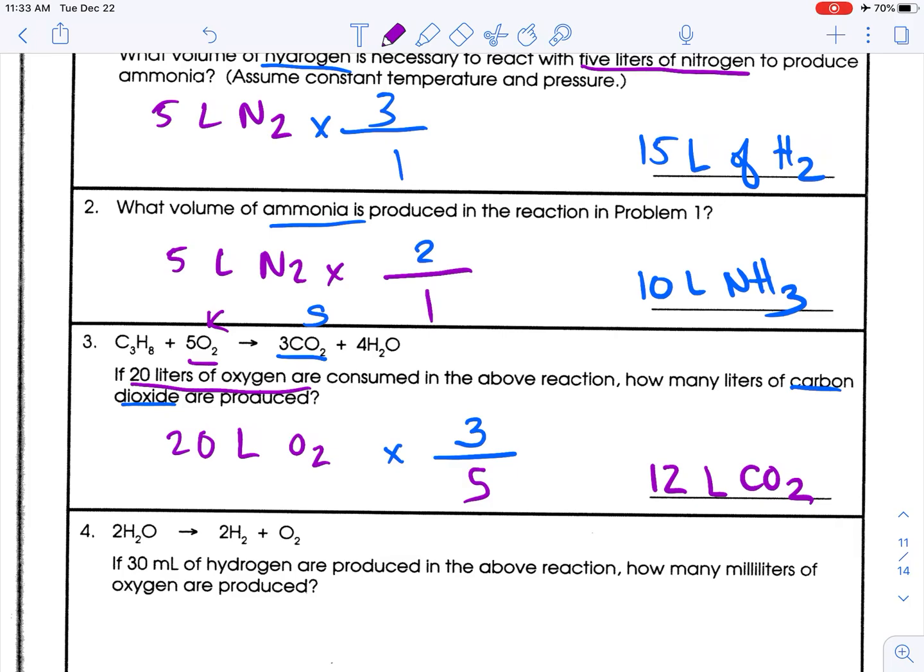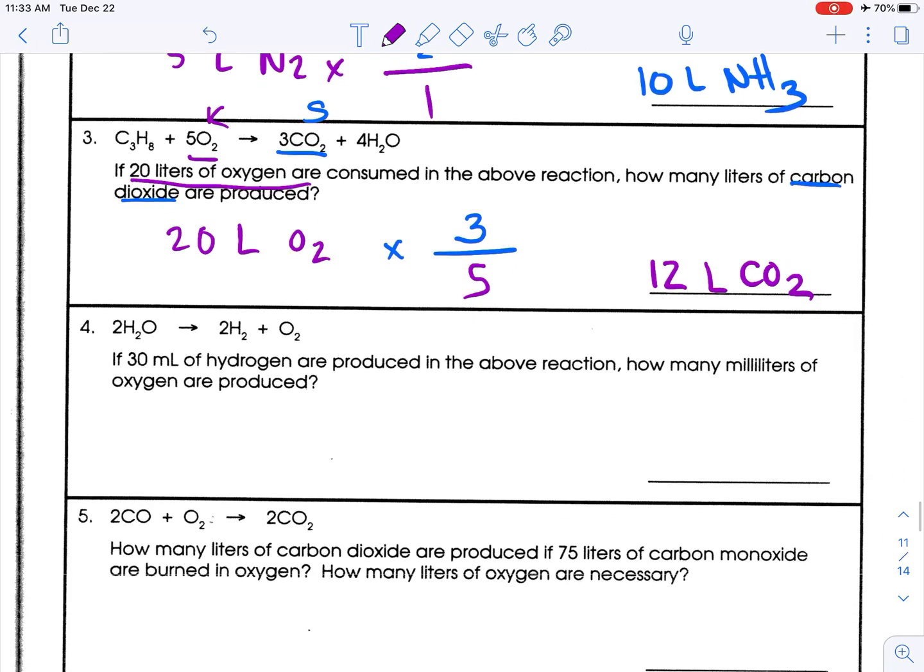If 30 milliliters of hydrogen are produced in the above reaction, how many milliliters of oxygen are produced? So I am given 30 milliliters of hydrogen, so that is my known. So 30 milliliters of hydrogen, and seek over known, that coefficient is a 2. What do I seek? I seek oxygen. This is what I seek, which is a 1. So 30 times 1 is 30, divided by 2 is 15 milliliters of oxygen.